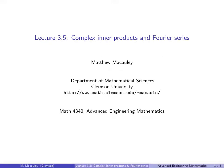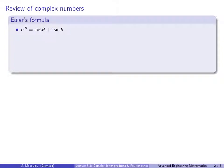Welcome to Lecture 3.5: Complex Inner Products and Fourier Series. Let's begin with a quick review of complex numbers. I'm assuming you've seen this before, but even if you haven't, it should be elementary enough to pick up easily. The most important result is called Euler's Formula, which says that e to the i theta equals cosine of theta plus i sine of theta. If you haven't seen this before, it seems like a minor miracle. I'll draw some pictures shortly, but first let me show you a few consequences.